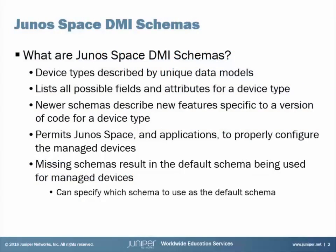At this point you might be asking yourself: what is a Junos Space DMI schema? To answer that question, the first point is that device types are described by unique data models. This is basically a kind of template that describes unique data models, and it lists all possible fields and attributes for a device type. So now we're talking about configuring devices, the different configurable fields — what can we do with these devices?